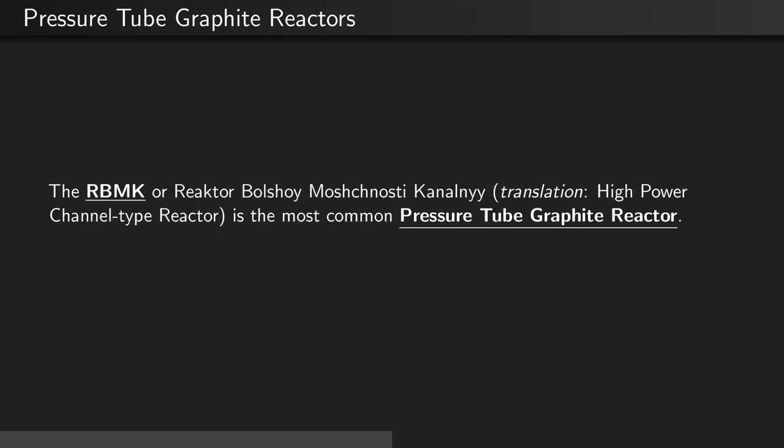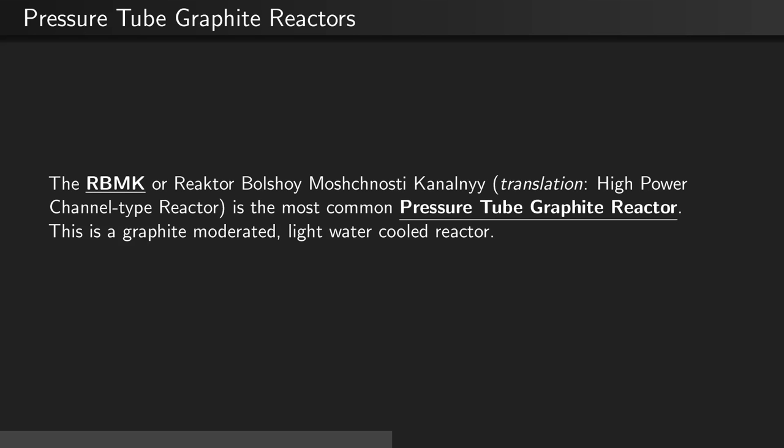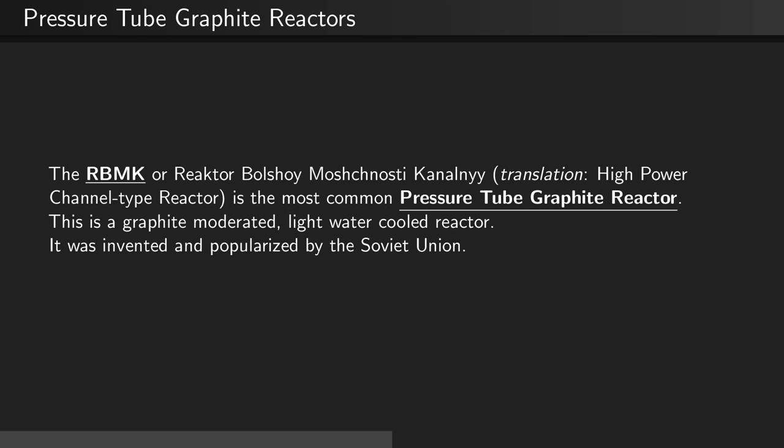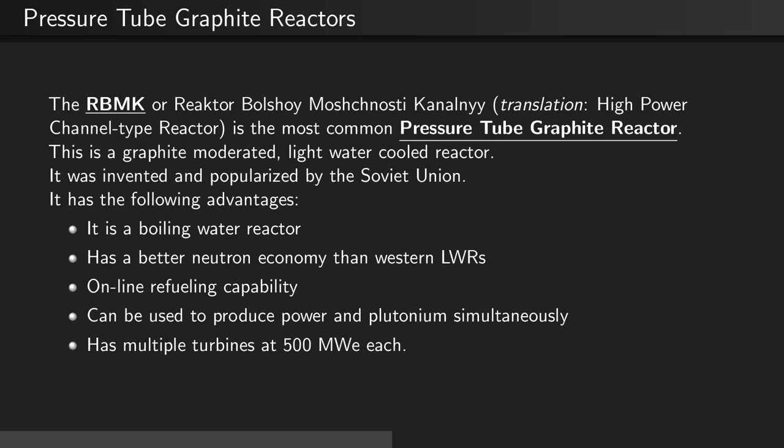The RBMK is the most common type of pressure tube graphite reactor. It is a graphite-moderated, light water-cooled reactor, invented and popularized by the Soviet Union. Its advantages include being a boiling water reactor with better neutron economy than western light water reactors, online refueling capability, and the ability to produce power and plutonium simultaneously.